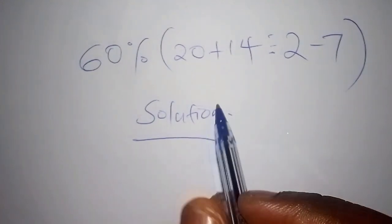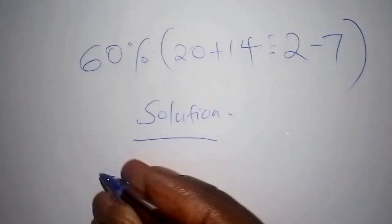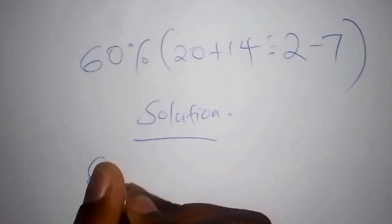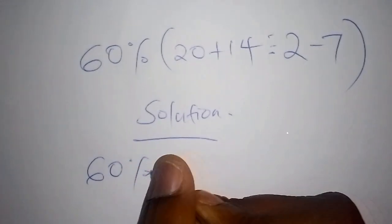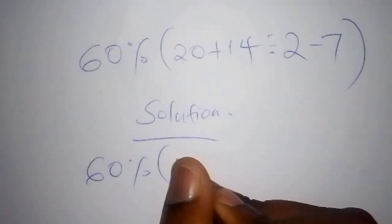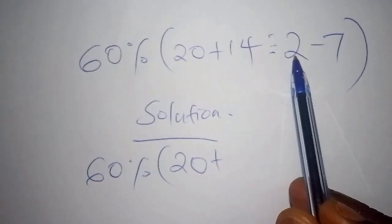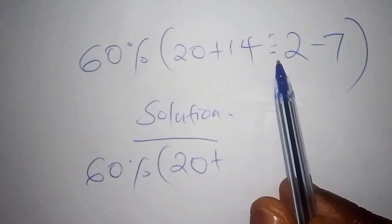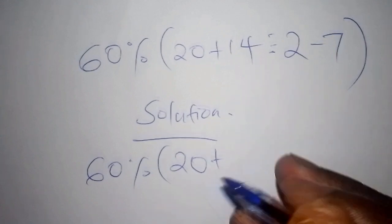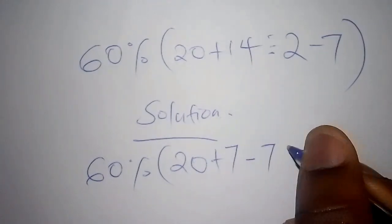The first step we're going to do is work out the numbers inside the bracket. We shall have 60 percent, then open the bracket. We have 20 plus, let's begin with the division sign, 14 divide by 2, and our answer is 7, so minus 7, and then we close the bracket.